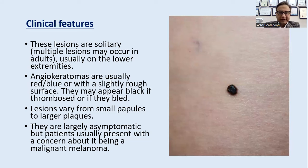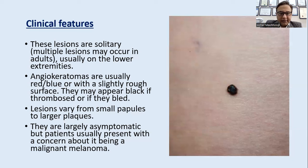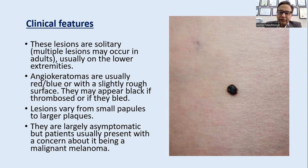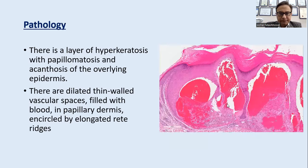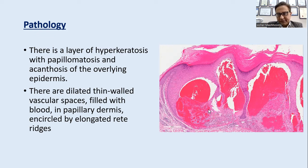Lesions are not as red as cherry angioma but rather red and blue in color with rough surface, and may appear black if vessels are thrombosed or have bled. They can be a papule or plaque, largely asymptomatic, but fair-skinned patients often present with fear of malignant melanoma. Diascopy is very characteristic, revealing multiple blood-filled vascular spaces. Histopathology shows a thin layer of hyperkeratosis, acanthosis, and dilated thin-walled vascular spaces filled with blood in the papillary dermis.